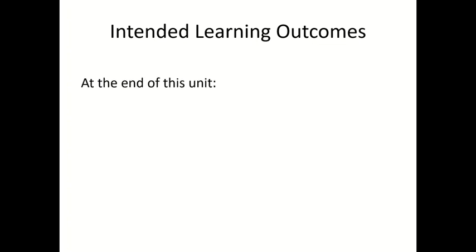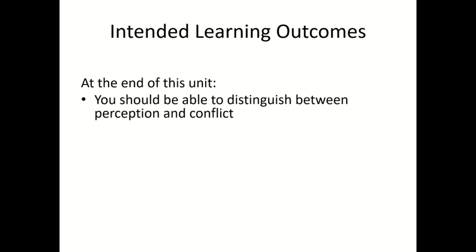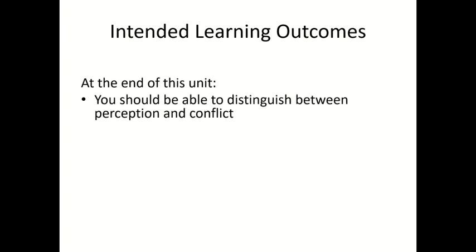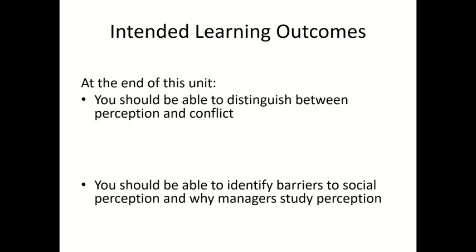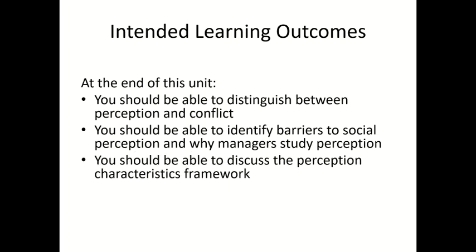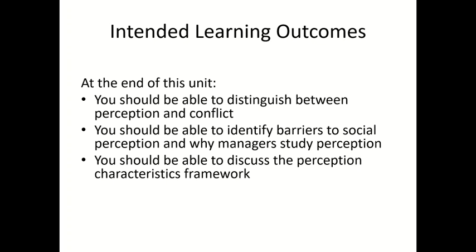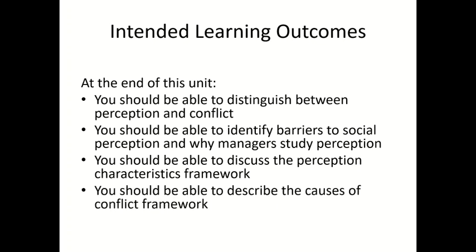The intended learning outcomes are: at the end of this unit, you should be able to distinguish between perception and conflict; identify barriers to social perception and why managers study perception; discuss the perception characteristics framework; and describe the causes of conflict.